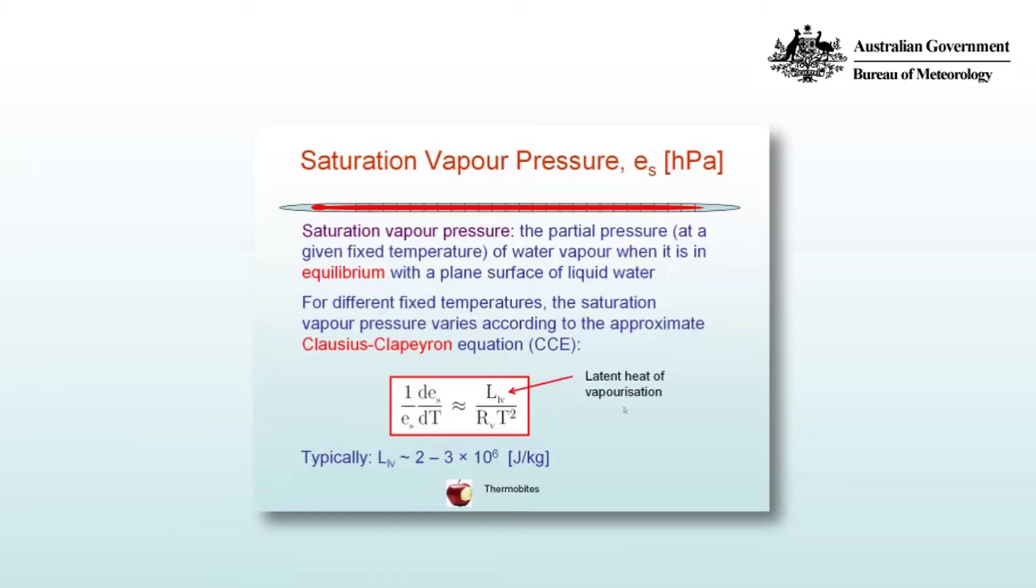The saturation vapour pressure, ES, which we'll also measure in hectopascals, is defined as the partial pressure at a given fixed temperature of water vapour when it is in equilibrium with a plain surface of liquid water.